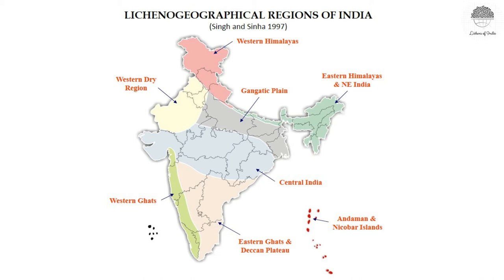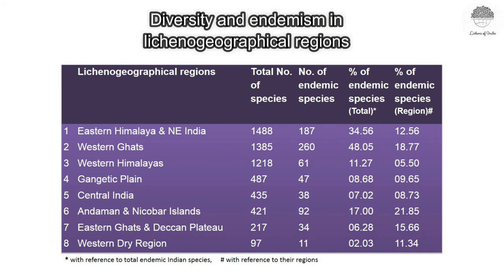Regarding the lichenogeographic regions of India, Singh and Sinha in 1997 divided India into eight lichenogeographic regions based on the 10 dominant lichen families and genera. These are: Western Himalayas, Gangetic Plains, Eastern Himalayas and Northeast India, Western Dry Region, Western Ghats, Eastern Ghats, Deccan Plateau, Central India, and Andaman and Nicobar Islands. You can see all eight regions in this map.